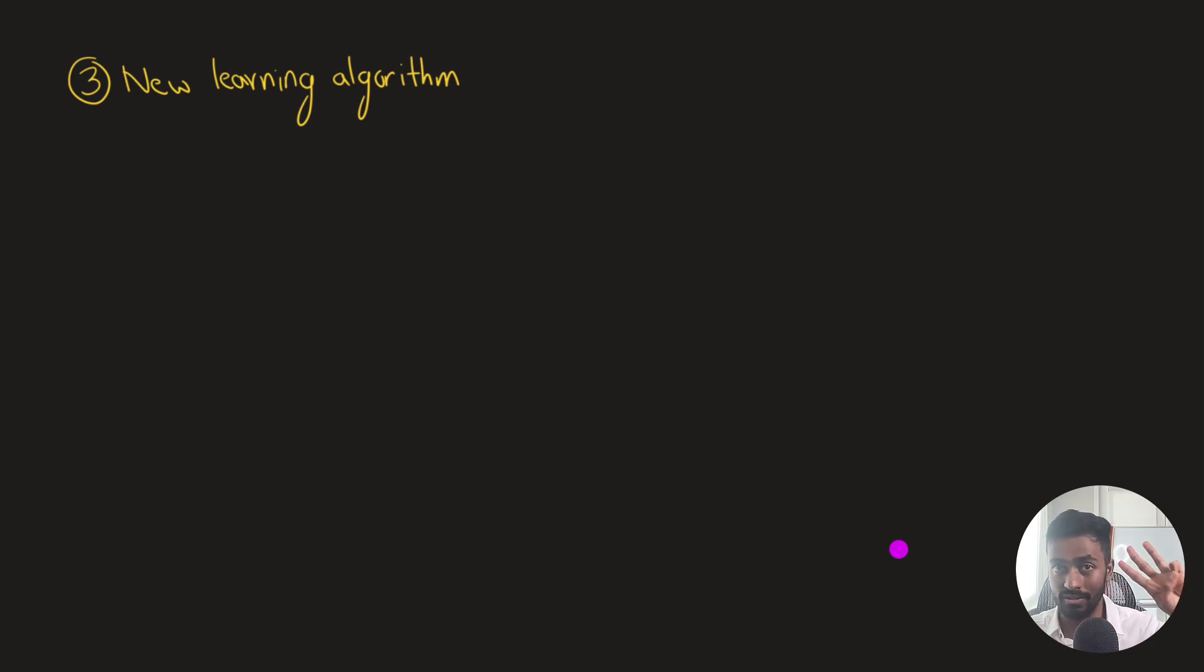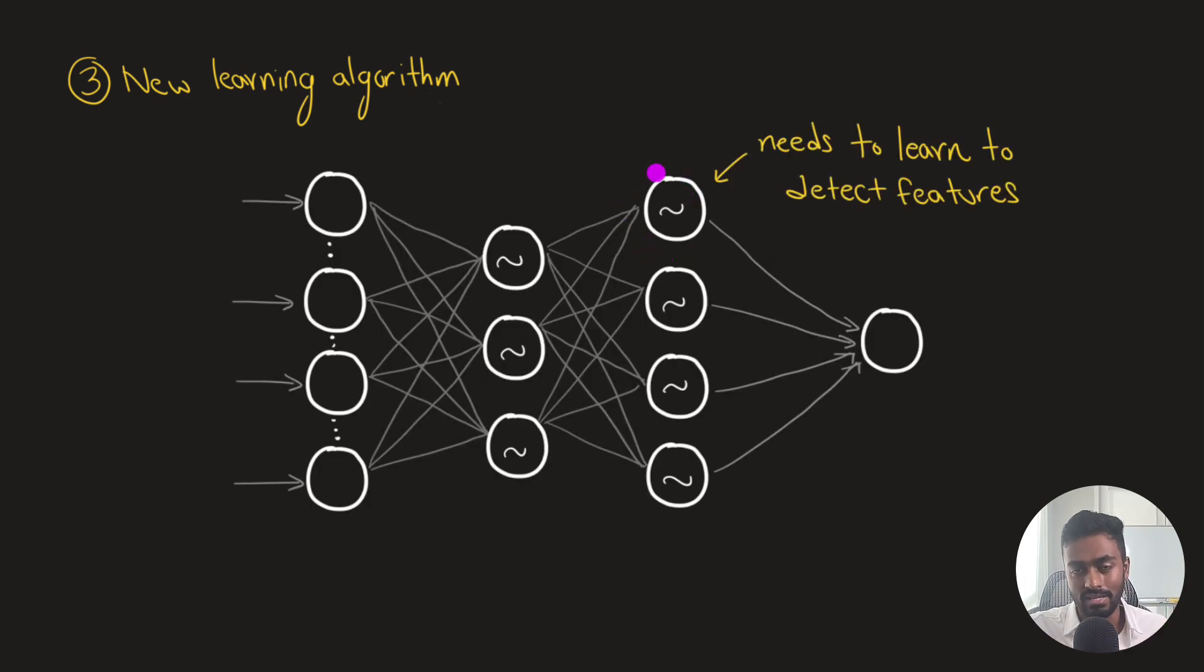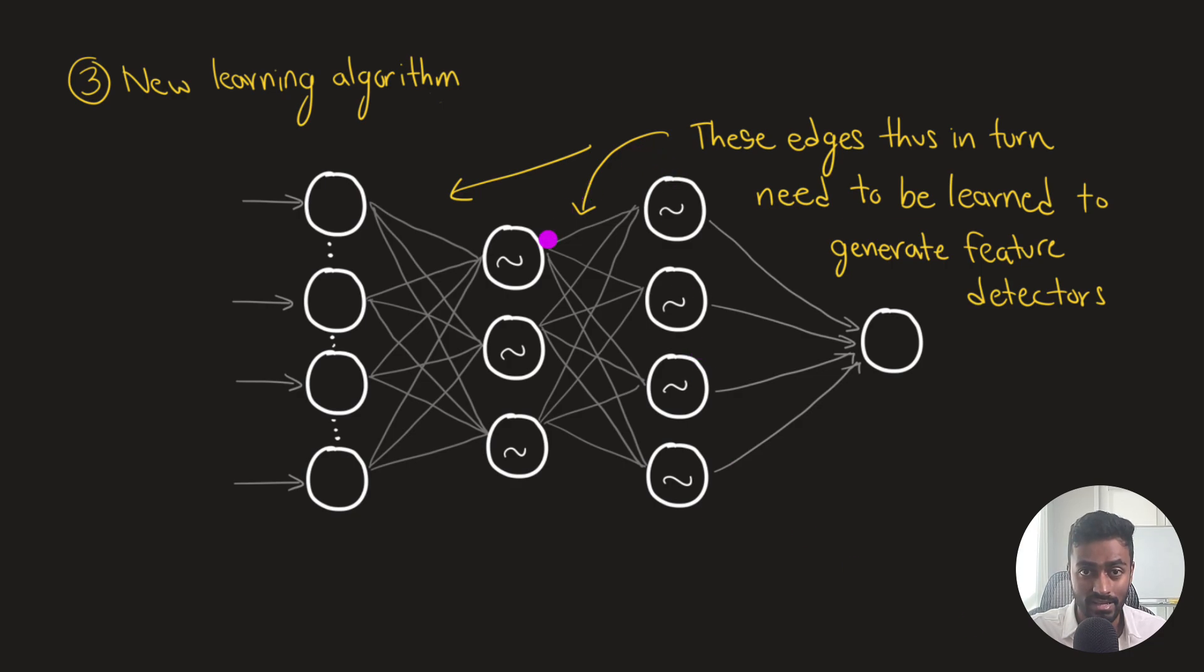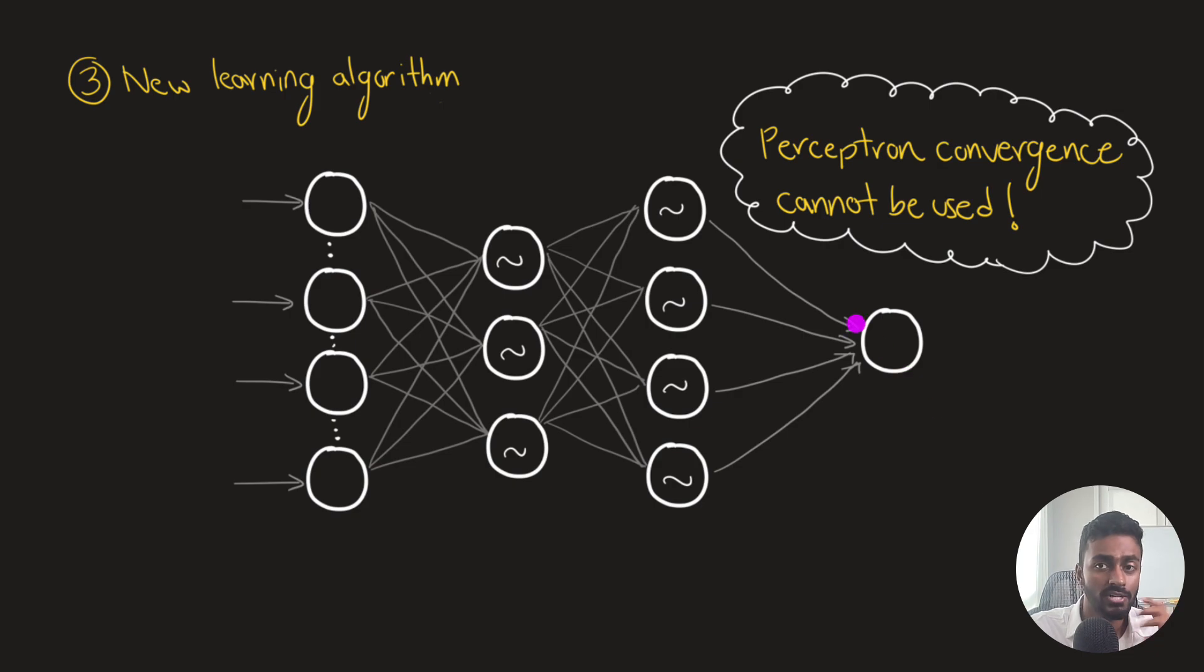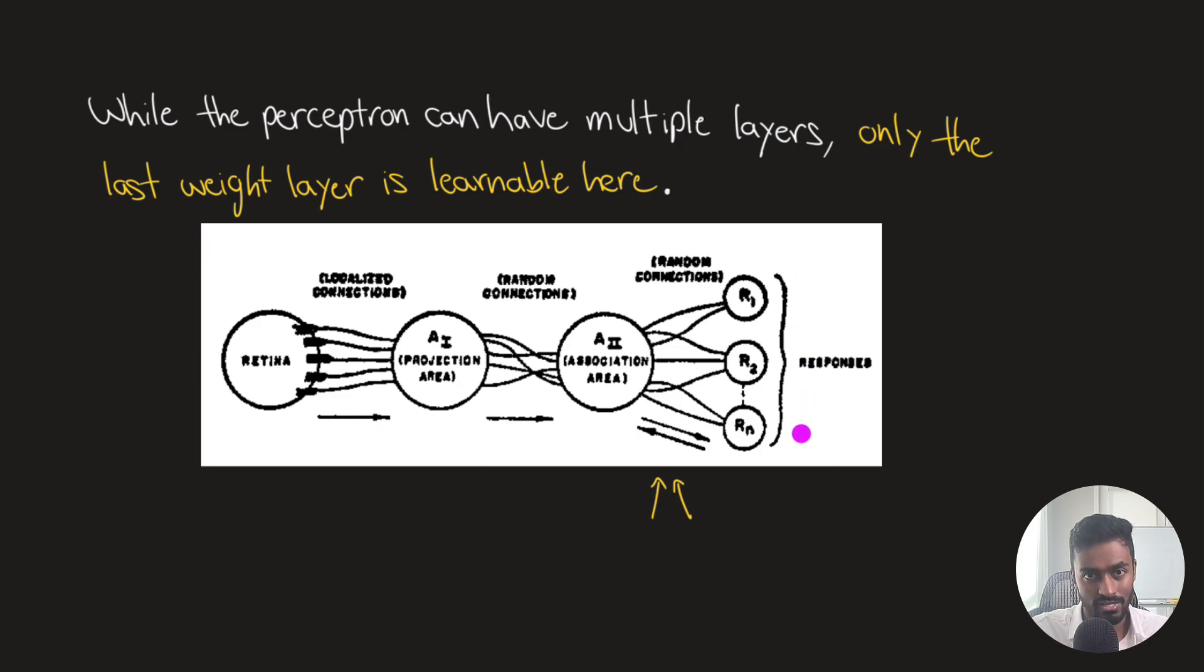So now let's move on to the third change that we made, which is we introduced a new learning algorithm. So we have these neurons here that are hidden neurons, these need to learn how to detect good features. But in order to learn how to detect good features, it means that these edge weights that are hidden over here, need to also be learned to generate good features. Now, the perceptron convergence learning procedure can't really be used here. Because in the organization of the perceptron that was introduced, we see that while the perceptron, the original perceptron could have multiple layers, it's only this last weight layer that is actually learnable here. But the big question here is now, why can't we use perceptron convergence?